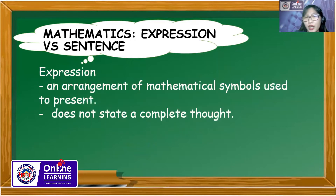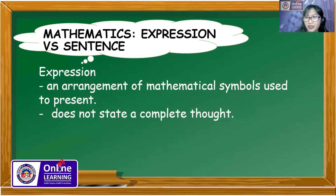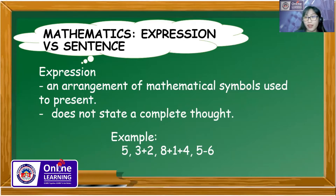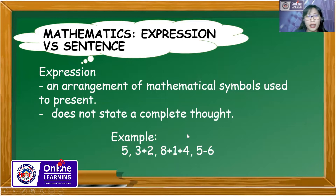An expression is an arrangement of mathematical symbols; it does not state a complete thought. So it doesn't make sense to ask if the expression is true or false. Examples of expressions are: 5; 3 plus 2 — it just says 3 is added to 2, it does not state a complete thought; 8 plus 1 plus 4; and 5 minus 6. If a mathematical symbol does not state a complete thought, then that is an expression.